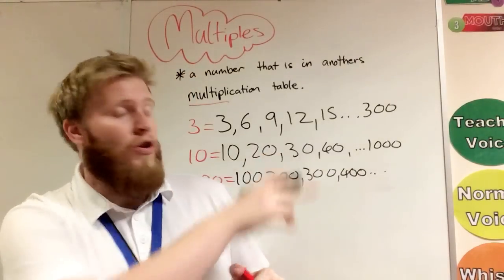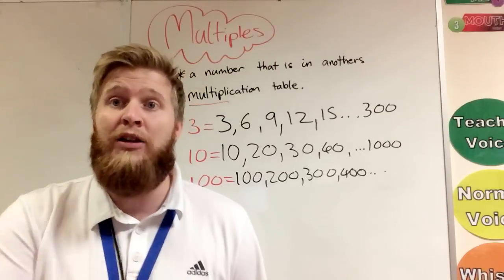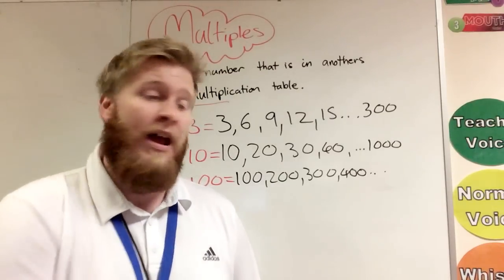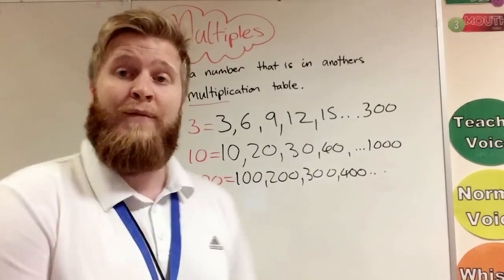In ten, if we have a look, all of the numbers end with zero, so any number that ends in zero is a multiple of ten. With a hundred, we can see they all end in two zeros, so any number that ends in two zeros is a multiple of a hundred.